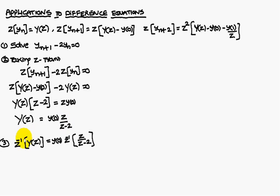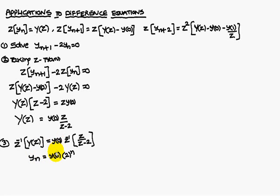Now applying Z-inverse to both sides: Z-inverse of Y(Z) is equal to Y(0) times Z-inverse of Z by (Z minus 2). Z-inverse of Y(Z) means Yn is equal to Y(0) times Z-inverse of Z by (Z minus 2), which is nothing but 2 power n. So this is the way to solve difference equations.